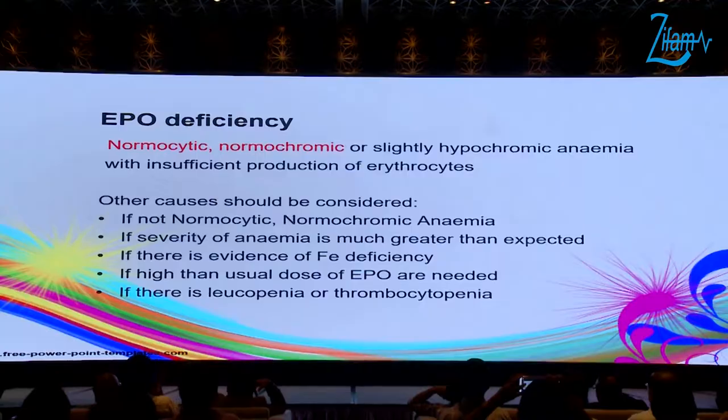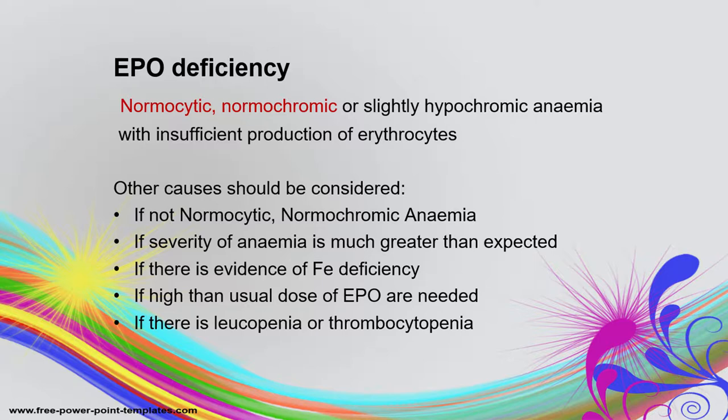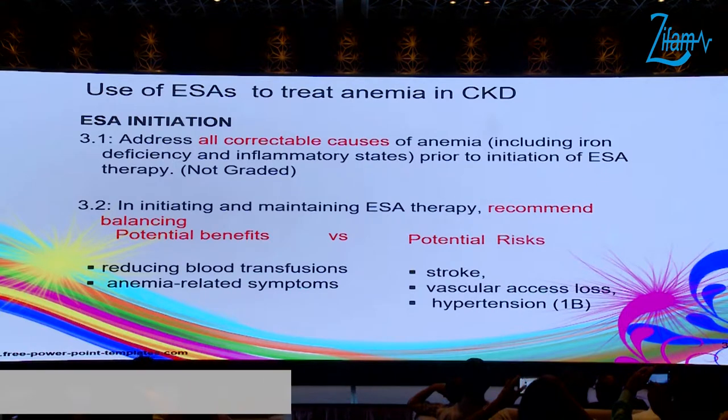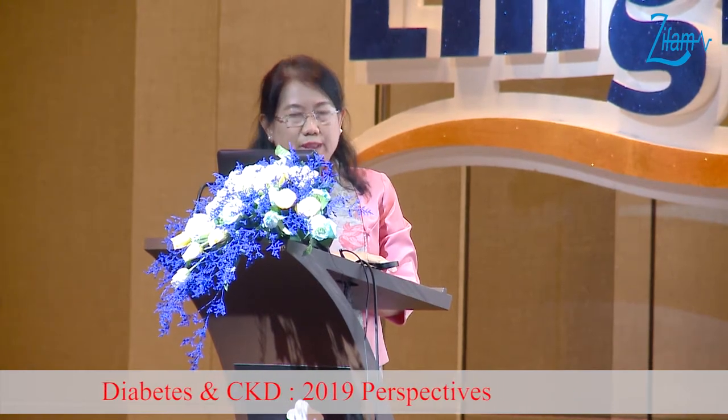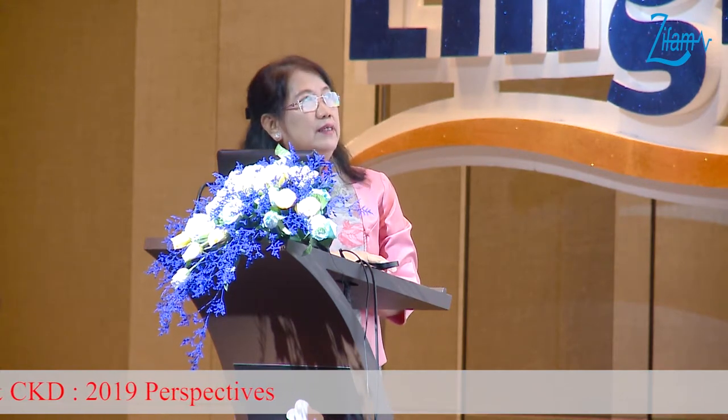After evaluation, if the patient has normochromic normocytic anemia, we diagnose EPO deficiency. When the patient has EPO deficiency, we give erythropoiesis-stimulating agents (ESA). Before starting ESA, we have to correct all correctable causes, balance the potential benefits against potential risks, and then start the ESA.